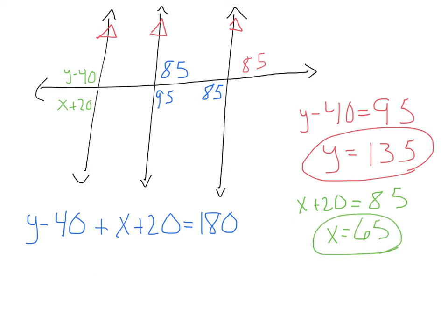There's so many different ways you could set this up. We could also say that these are vertical angles here. I could label that 95. These are alternate exterior angles. I can label this 95. And then if I wanted to, I could say x plus 20 plus 95 equals 180. Or I could do another corresponding here and say this is going to equal to 85. Then I could say y minus 40 plus 85 equals 180. So there's lots of different ways you could set these up. If you're not sure, go ahead and just start labeling angles that you do know until you find an angle relationship that will work for you.